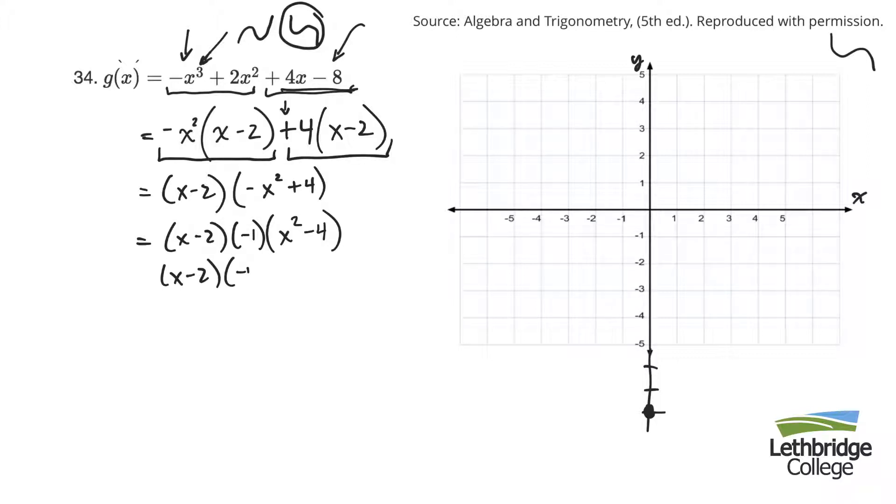So keeping going here, I have a negative 1. And then this is a difference of squares, so it would be x minus 2, x plus 2. And in the end, I'd probably put that minus 1 out front, and then I'd have x minus 2. There's two of them, so that's squared. And an x plus 2.